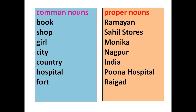We have a list of common nouns and proper nouns. If I say 'a book,' it is a common noun because it is a general name. But if I specify the name of the book as Ramayana, then Ramayana is a proper noun because it is a special name. Shop is a common noun; Souths and Stores is a proper noun. Girl is a common noun, but Monika is a proper noun. City is a common noun, whereas Nagpur is a proper noun. Country is a common noun, whereas India is a proper noun. Hospital is a common noun, whereas Pune Hospital is a proper noun.